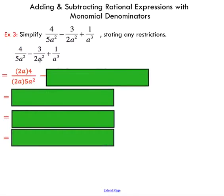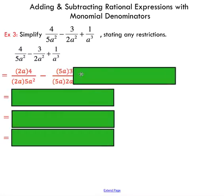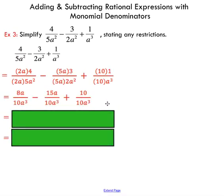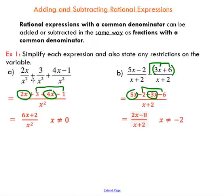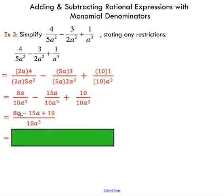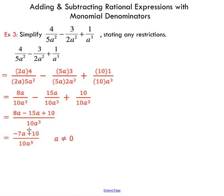For the second term with 2a cubed on the bottom, I multiply by 5 over 5 times a over a — since 2 times 5 is 10 and I need one more factor of a. For the last term, multiply by 10 over 10. Now all denominators are 10a cubed — common denominators — so we add straight across. Writing everything in the numerator gives a nice simplified expression, noting that a cannot equal zero.